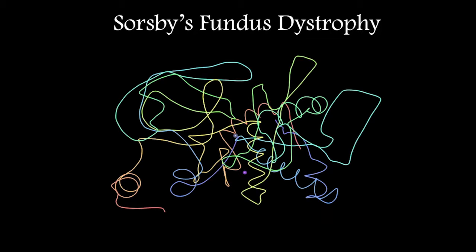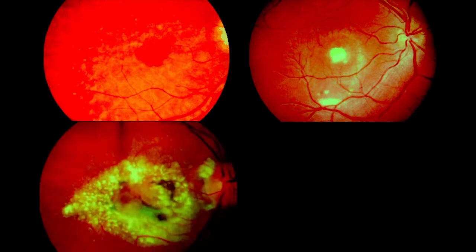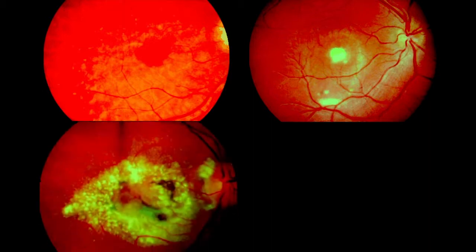Soresby's fundus dystrophy is an autosomal dominant macular dystrophy in which the TIMP-3 gene has been mutated. Clinically, early mid-peripheral drusen and color vision deficits are found in patients with SFD. Some patients complain of night blindness. However, most commonly, the preceding symptom is sudden acuity loss which manifests at around the age of 30 to 40.